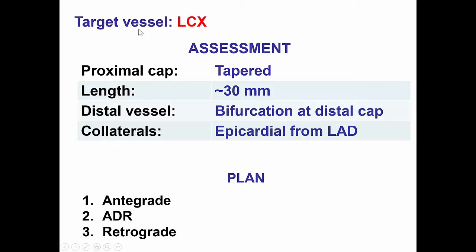Therefore, we have a circumflex CTO with a tapered, well-defined proximal cap, a relatively short length of occlusion, good-sized distal vessel with a bifurcation on the distal cap, and epicardial collaterals from the distal LAD. Our plan was to perform antegrade wire escalation, followed by antegrade dissection and re-entry with a plan to re-enter proximal to the bifurcation if needed, and then retrograde as the third option.